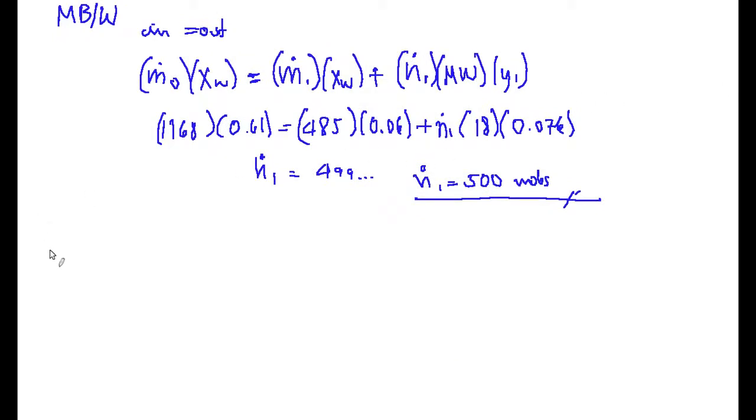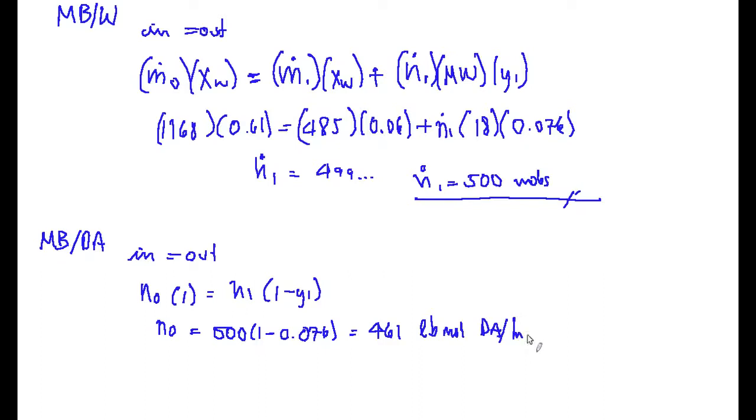Let's do a mass balance on dry air. We just need to take out the water and we are going to find the dry air, which is what they are asking for in volume. The amount of moles going in, which is pure mixture, equals n1 minus this. This is the mole fraction of air and this is the amount of air with mixture. So n0 equals 500 times (1 minus 0.076). You should get 461 pound moles of dry air per hour. This is n0.